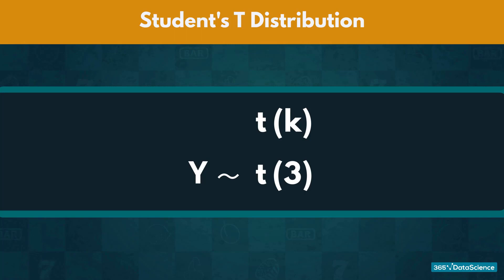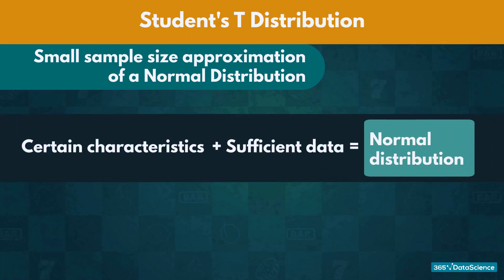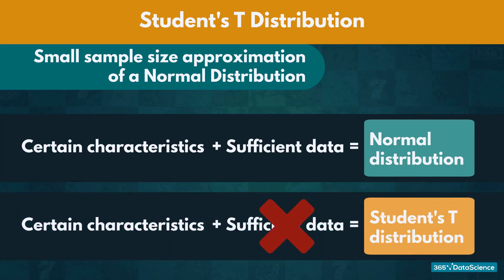As we mentioned in the last video, it is a small sample size approximation of a normal distribution. In instances where we would assume a normal distribution were it not for the limited number of observations, we use the student's t-distribution.